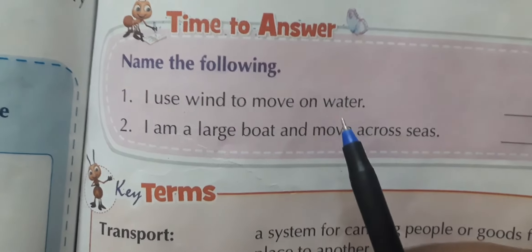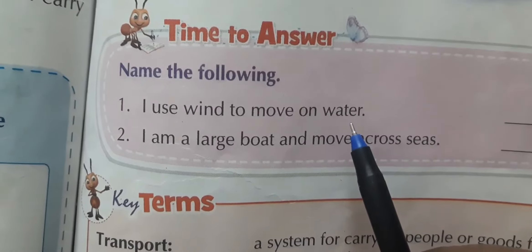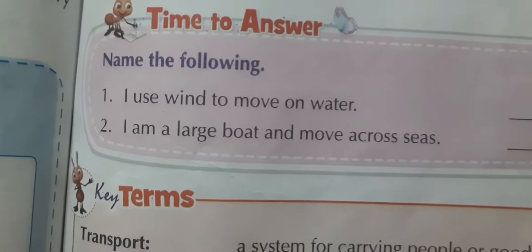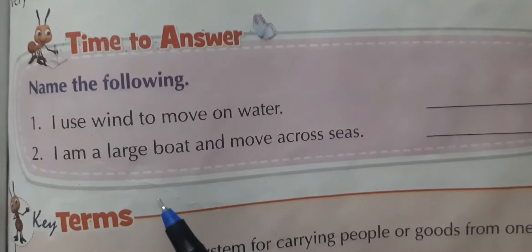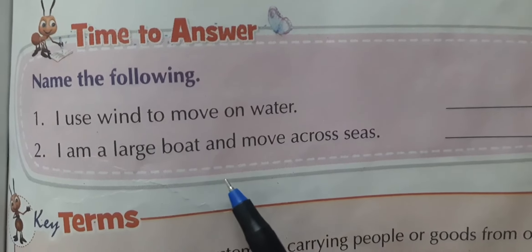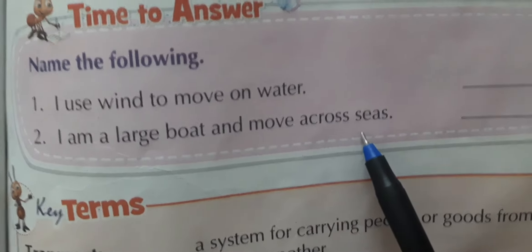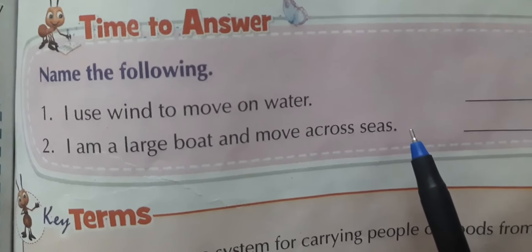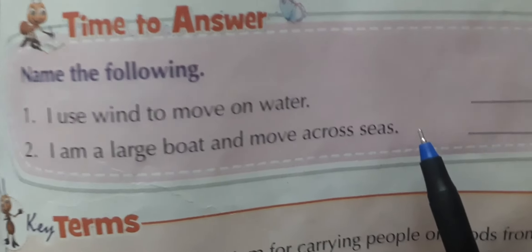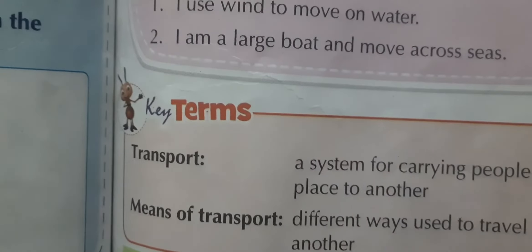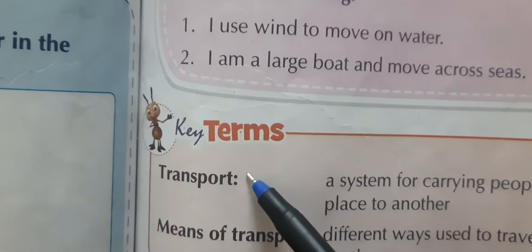Now, name the following. 'I use wind to move on water' — that is the sailboat. 'I am a large boat and I move across seas' — that is the ship.